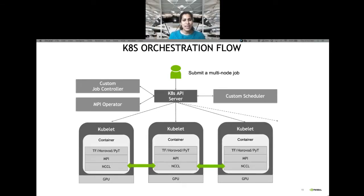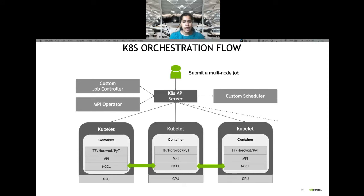Thank you, Vatsan. Hello everyone. I'm Nivedita. Vatsan talked about the best practices and network protocols to consider while designing a high-performance multi-node cluster in a data center. I would like to talk about how we leveraged those design decisions to enable high-speed networking in Kubernetes. We have an on-prem production Kubernetes cluster mainly used by internal users — primarily research scientists running deep learning applications that often require hundreds of GPUs. We enabled support for multi-node workloads through a custom job controller, the upstream MPI operator, and a custom batch scheduler.